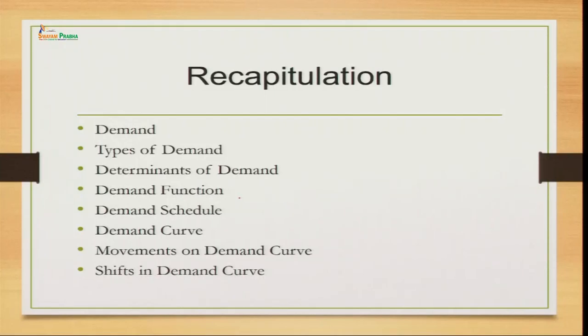We talked about movements on the demand curve, which take place because of change in price. If demand increases because of a decrease in price, we call it expansion. Whenever demand decreases because of an increase in price, we call it the contraction phase. Shifts in demand curve take place because of change in factors other than price — such as if the income of the consumer is increasing or taste and preferences are changing. If demand increases, the curve shifts rightward; if demand decreases, it shifts leftward.